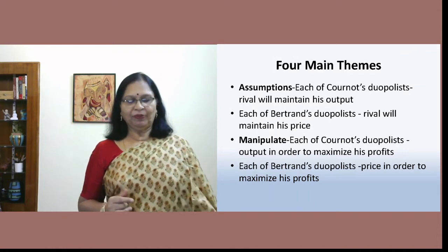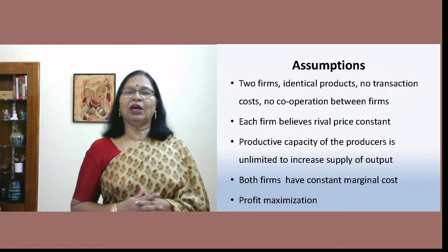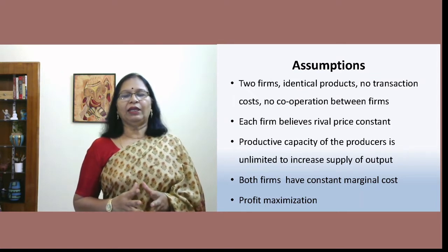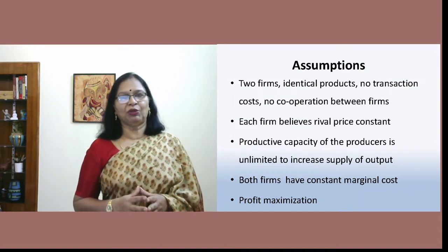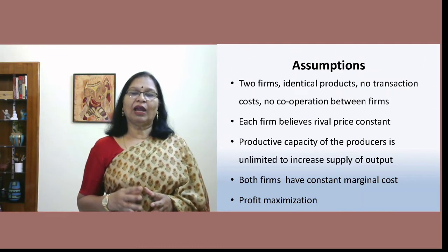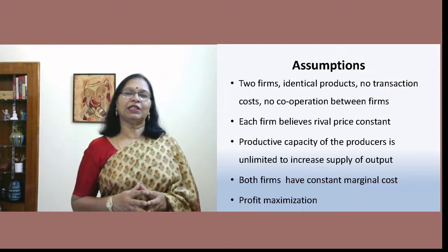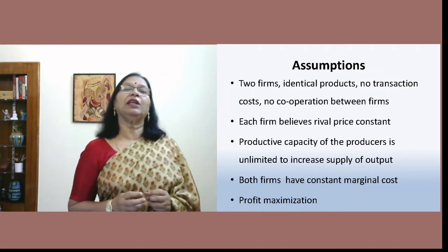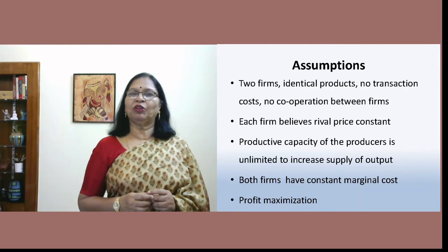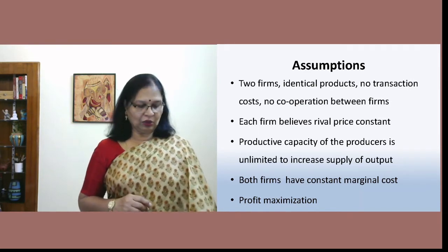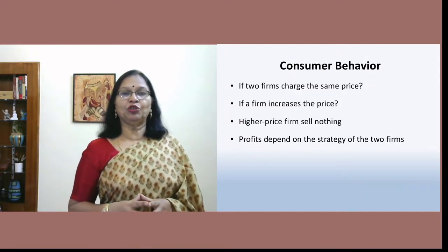The assumptions of Bertrand are not very different from those of Cournot. He maintained two firms with identical products, no transaction cost, and no cooperation between the two firms. Each firm believes that the rival's price will remain constant. He also believes the productive capacity of the firm can be changed to meet the required demand, both firms have constant marginal cost, and both firms have profit maximization as their goal.